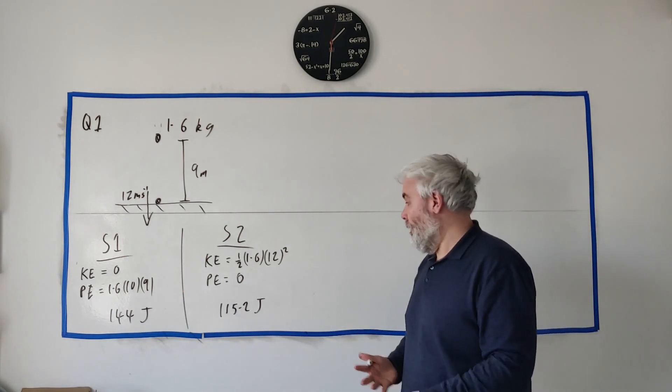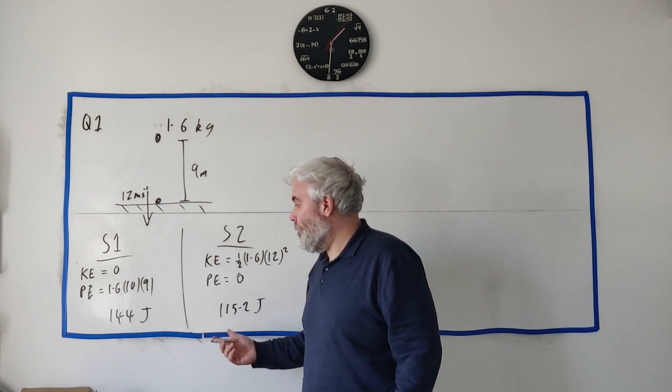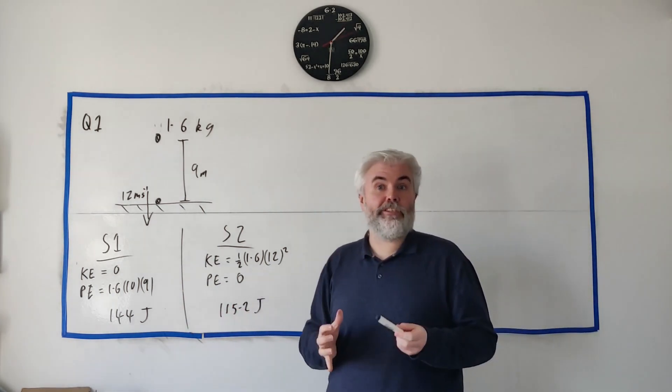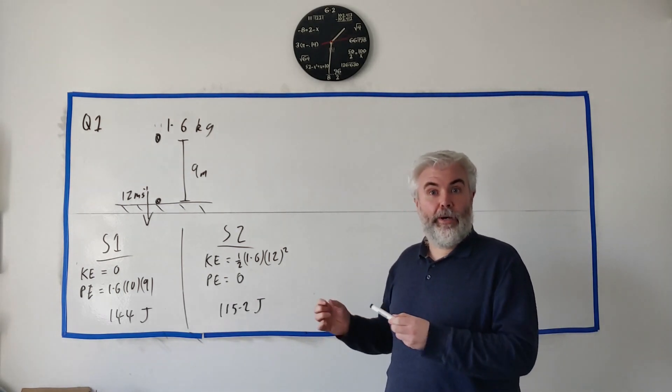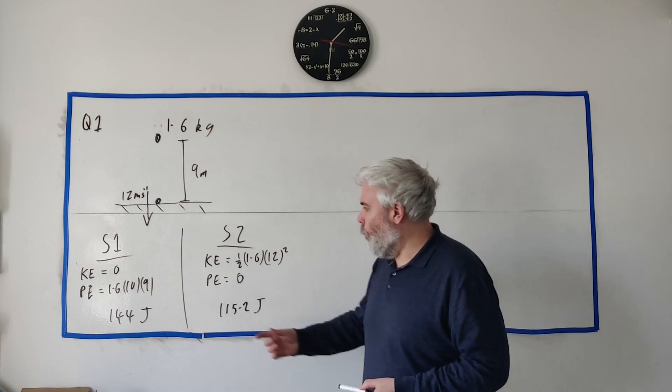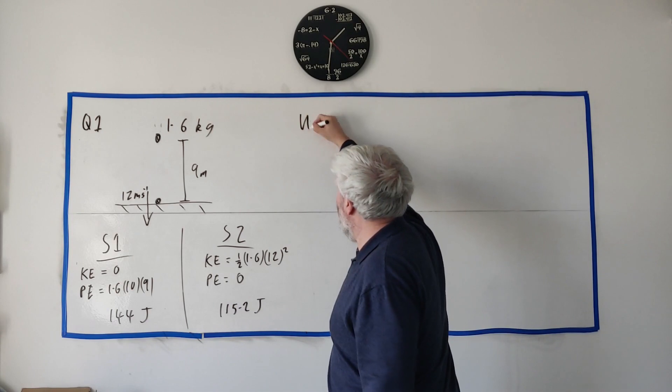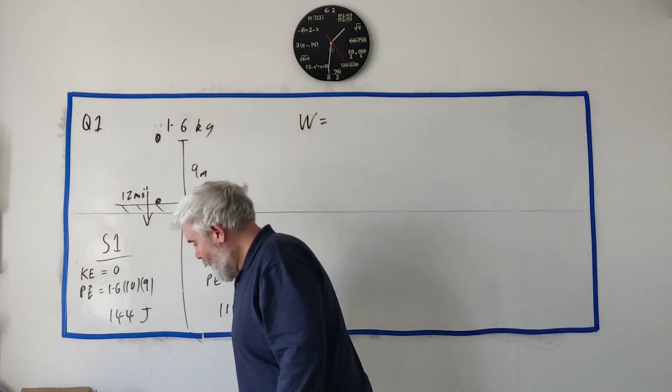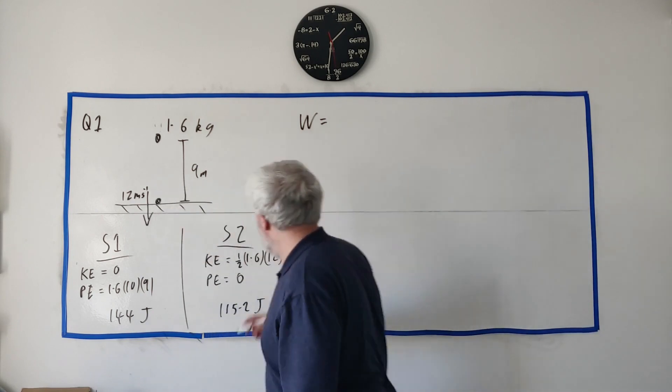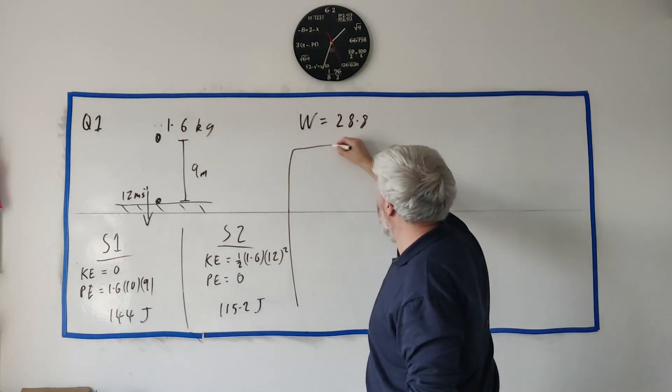Now that's a problem - the energy at the start is different than the energy at the end. Energy is conserved so something must have happened to make this difference and that's the air resistance. The work done by air resistance is what's missing, so the work equals 144 minus 115.2 which is 28.8.